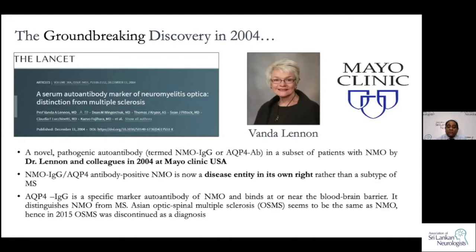After that, NMO became a disease entity on its own, totally different from MS. The aquaporin-4-specific autoantibody, which binds at the blood-brain barrier, distinguishes MS from NMO. Therefore, the earlier condition known as optico-spinal MS — supposed to be a variant of MS found in countries like Japan and Korea — was discontinued as a term, because most of those cases turned out to be NMO.